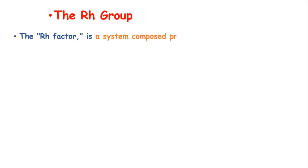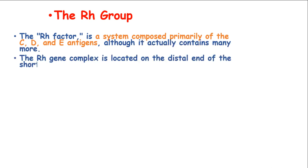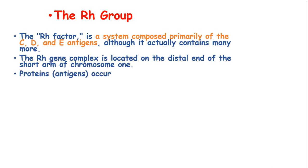The Rhesus group. The Rhesus factor is a system composed primarily of the C, D, and E antigens, although it actually contains many more antigens. The RH gene complex is located on the distal end of the short arm of chromosome 1. The proteins or antigens occur only on the surface of the red blood cells.